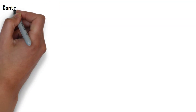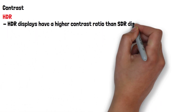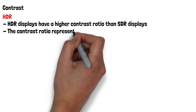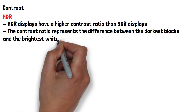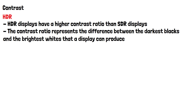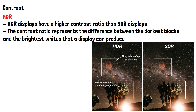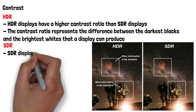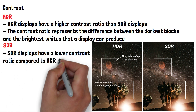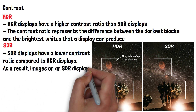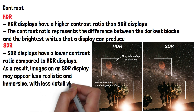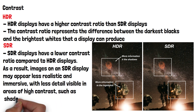Now let's look at contrast. HDR displays have a higher contrast ratio than SDR displays. The contrast ratio represents the difference between the darkest blacks and the brightest whites that a display can produce. HDR achieves a higher contrast ratio through localised dimming or OLED technology, which can control the backlighting of individual zones or even individual pixels. This results in deeper blacks and brighter highlights, allowing for more details to be visible in both the shadow and highlight areas of an image. SDR displays have a lower contrast ratio compared to HDR displays. As a result, images on an SDR display may appear less realistic and immersive, with less detail visible in areas of high contrast, such as shadows and highlights.